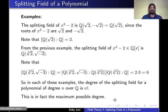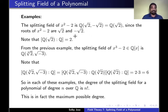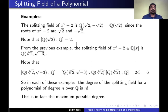Let us see some examples. What is the splitting field of x² - 2? The splitting field of x² - 2 is generated by its roots, which are √2 and -√2. Therefore the splitting field is Q(√2, -√2) = Q(√2). The degree of the extension Q(√2) over Q is 2, since the minimal polynomial of √2 is x² - 2, which has degree 2. We can treat this as 2! — the degree of the extension equals the degree of the polynomial factorial.